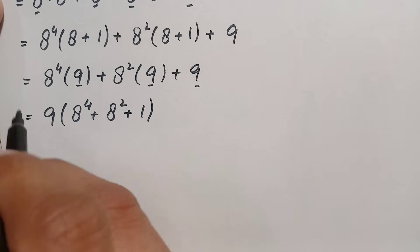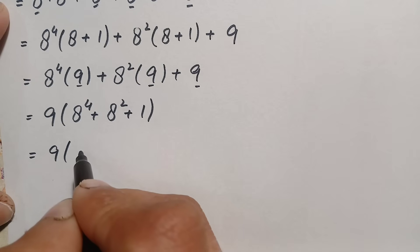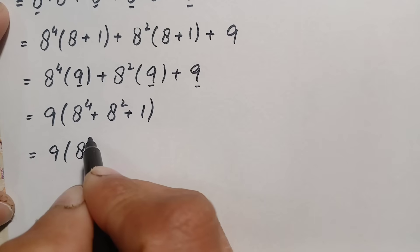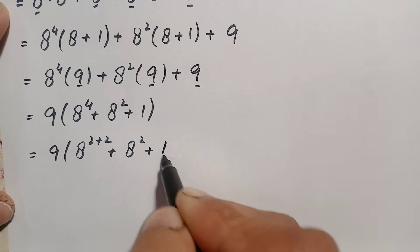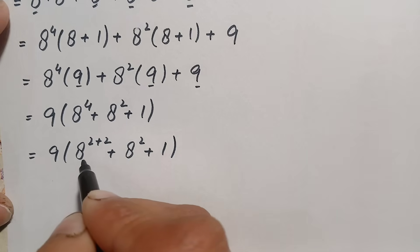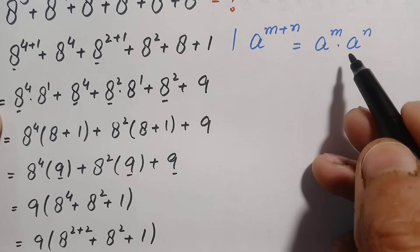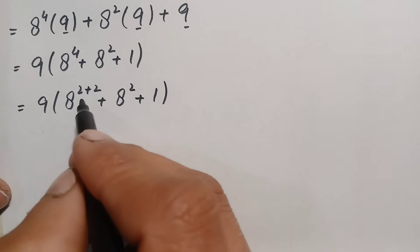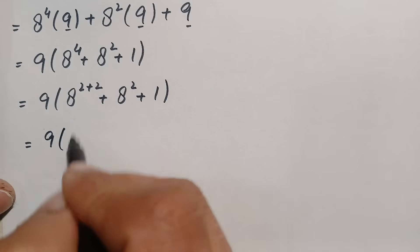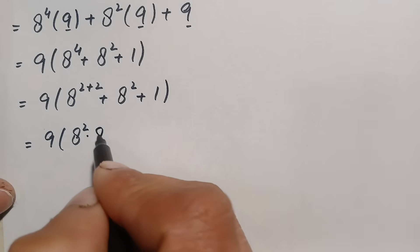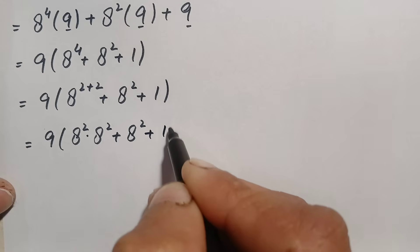Next we rewrite this expression. We write a raised to power 4 as a raised to power 2 plus 2. Then we use the exponential identity to split the power, so a raised to power 4 becomes a raised to power 2 times a raised to power 2. This gives us: 9 times, open parenthesis, a raised to power 2 times a raised to power 2, plus a raised to power 2, plus 1.